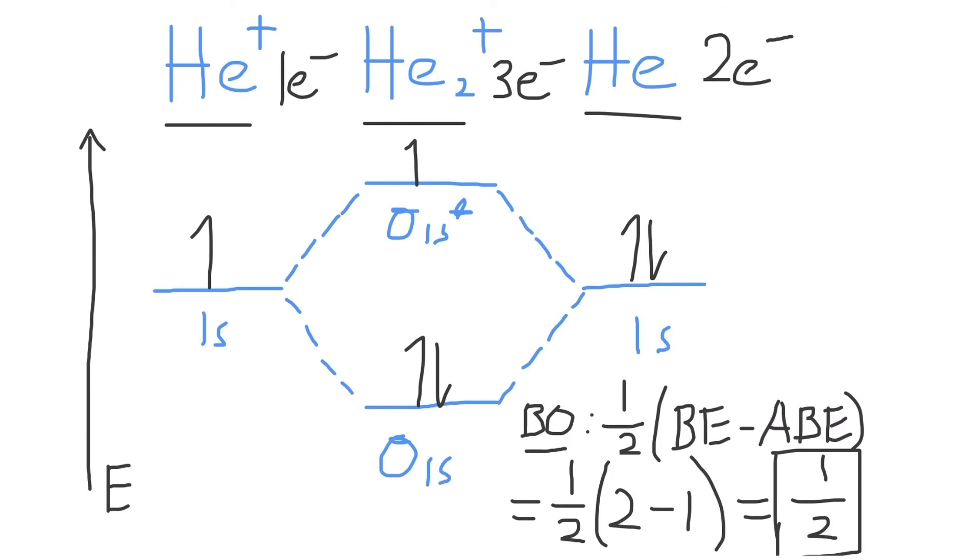Finally, is the He2+ molecule paramagnetic or diamagnetic? Because we have an unpaired electron in the σ1s star antibonding molecular orbital, we know that the He2+ molecule is paramagnetic.